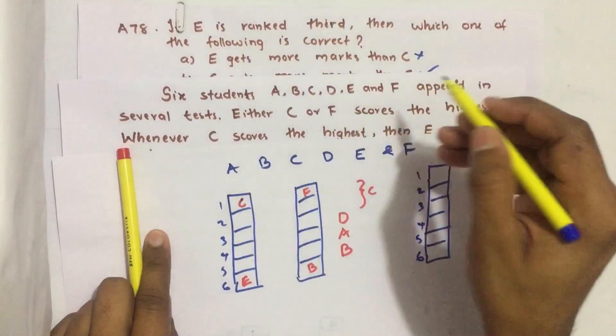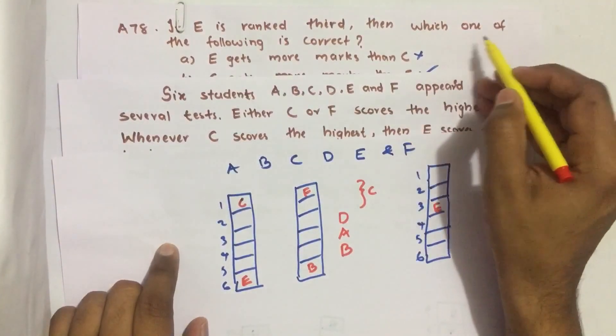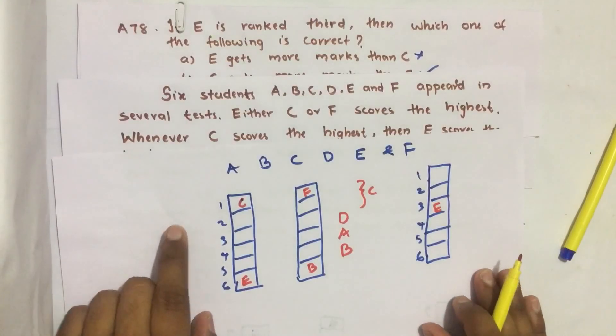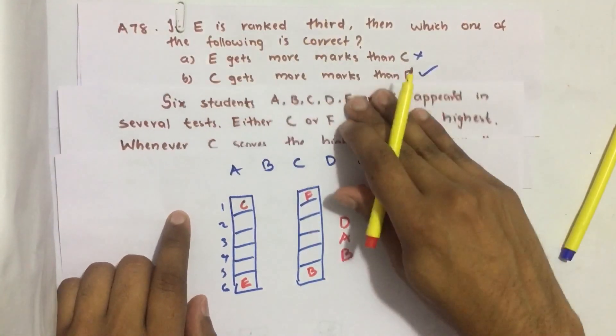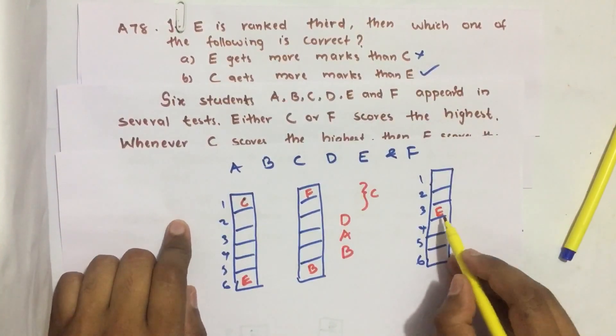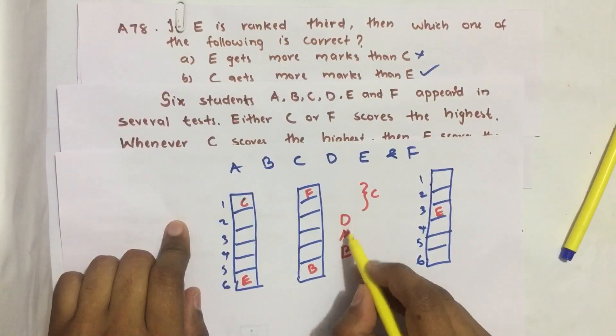Then which one of the following is correct? So if E scored third, then we know that B should be below A and D should be above A.